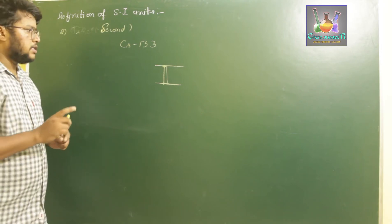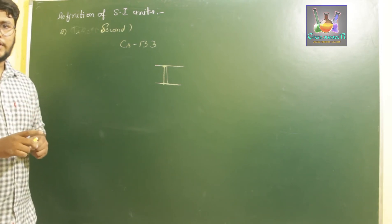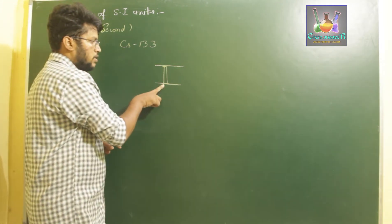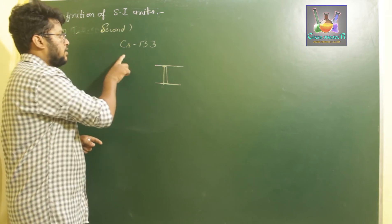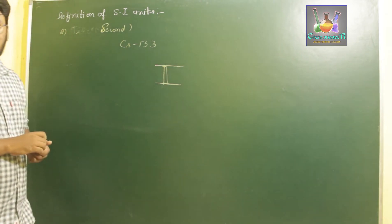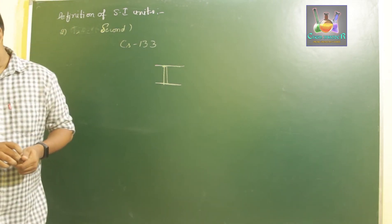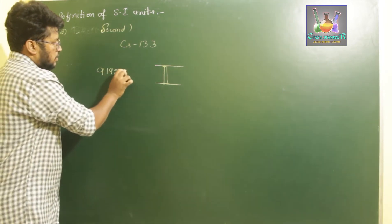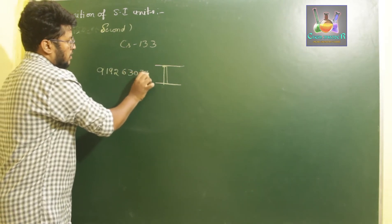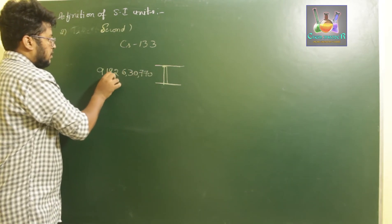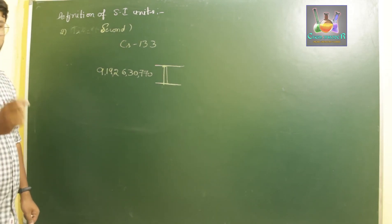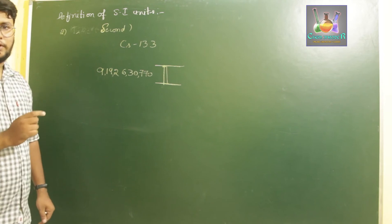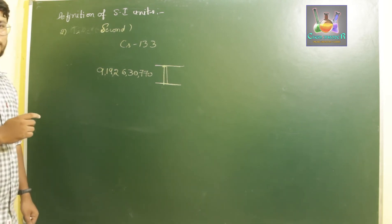One second is defined as the time period taken by the radiation for a transition between the two ground-state fine lines of cesium-133. This number of periods is found to be 9,192,630,770. This is the definition of second.